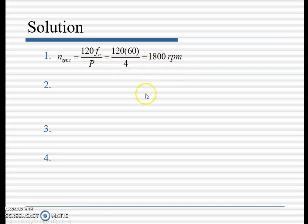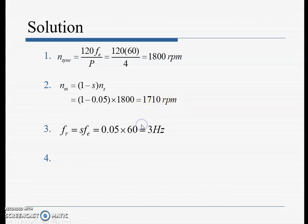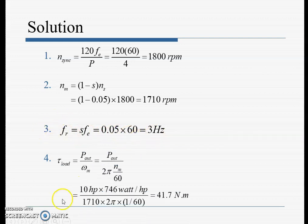The motor speed is n_m = (1 − s) × n_s = (1 − 0.05) × 1800 = 1710 rpm. The rotor frequency is f_r = s × f_e = 0.05 × 60 = 3 Hz.